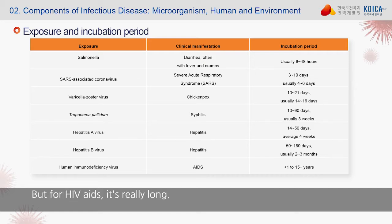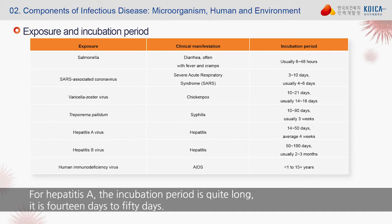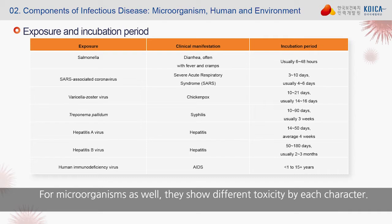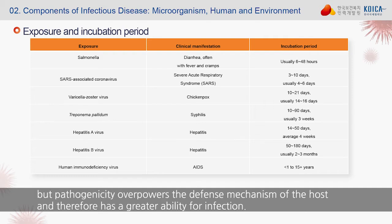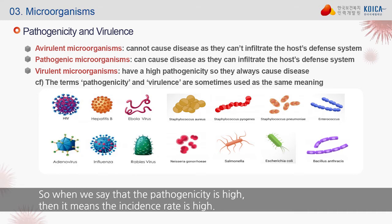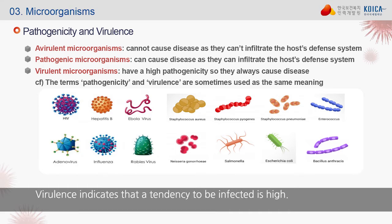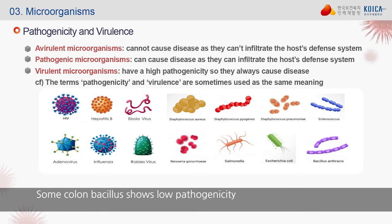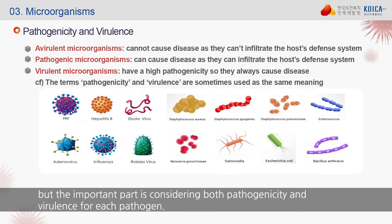For HIV, the incubation period is really long. For hepatitis A, it is 14 to 50 days. For salmonella food poisoning, the incubation period is 6 to 48 hours. Microorganisms also show different toxicity by character. Pathogenicity means overpowering the host's defense mechanism and having a greater ability for infection — so high pathogenicity means a high incidence rate. Virulence indicates a high tendency to cause severe disease. Staphylococcus aureus and colon bacillus are shown to have high pathogenicity, and it's important to consider both pathogenicity and virulence for each pathogen.